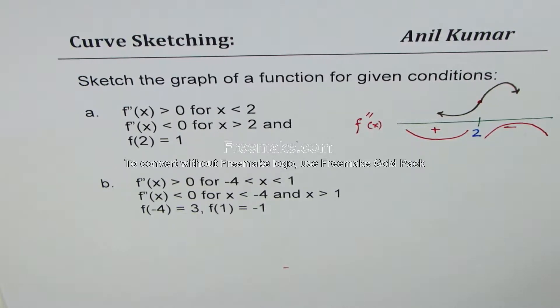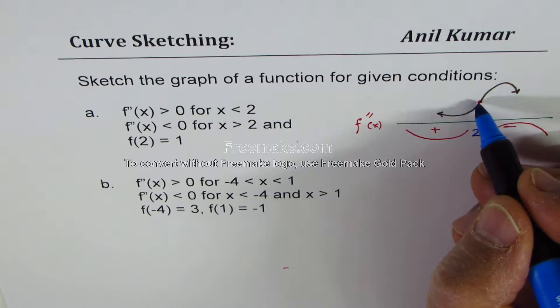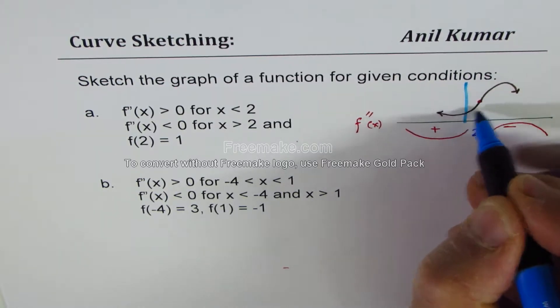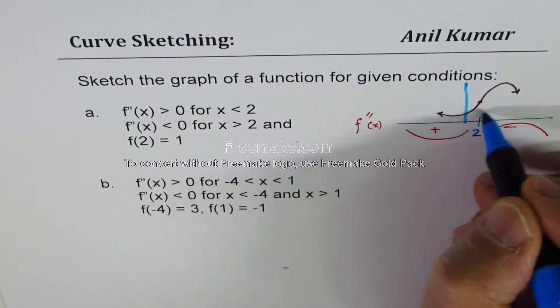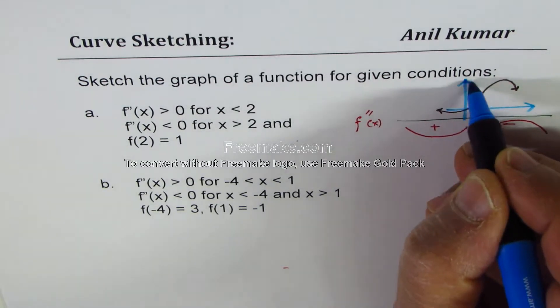And of course you can always sketch the coordinates. At 2 we want the value to be 1. So it could be something like this. So at 2 we want 1. Does it make sense to you?